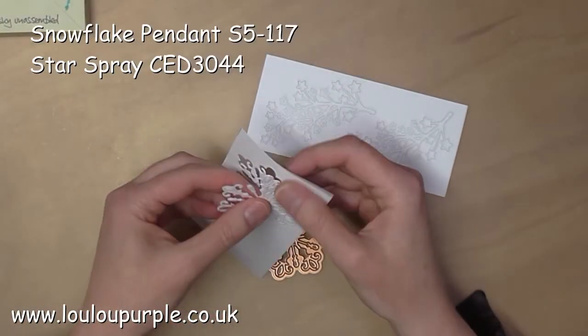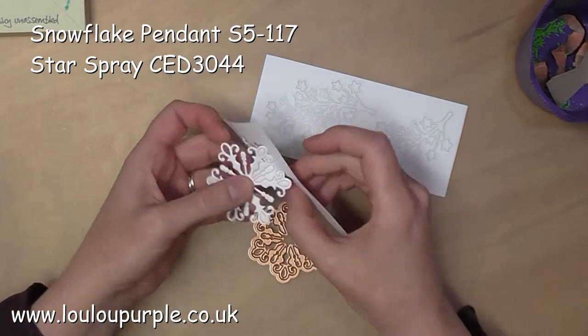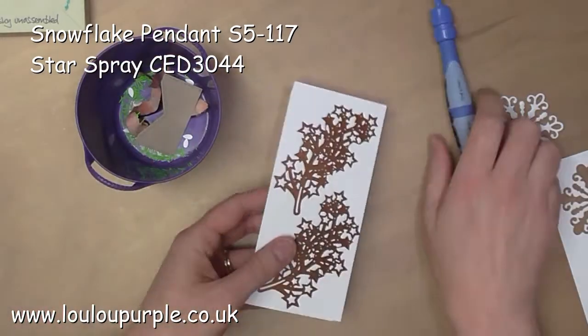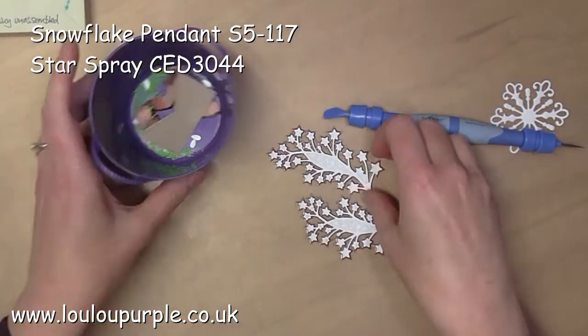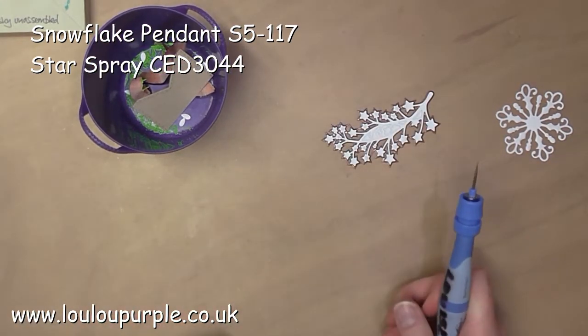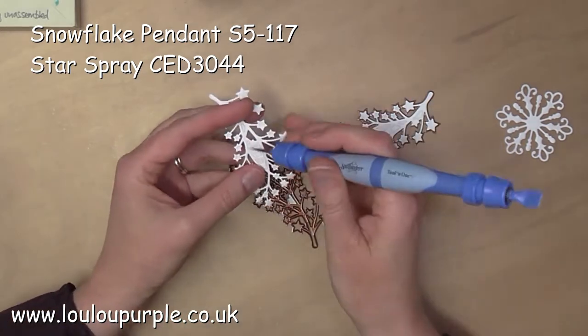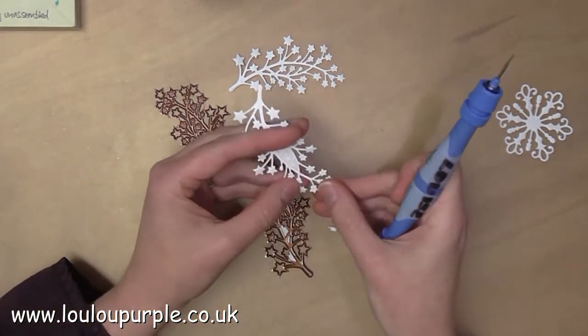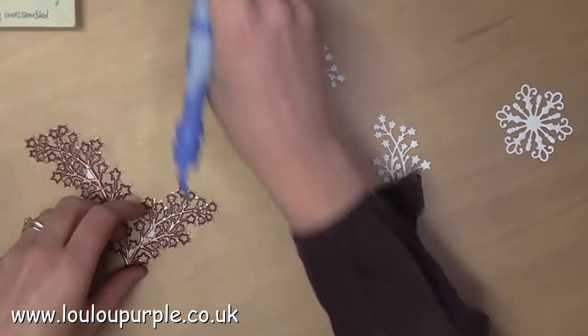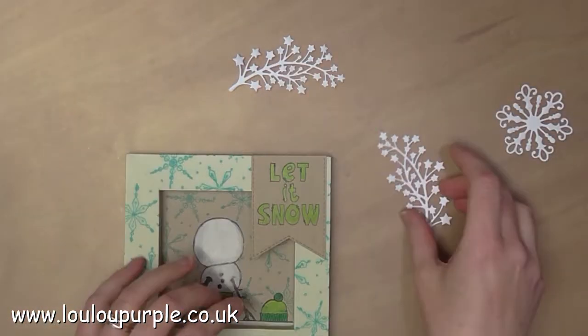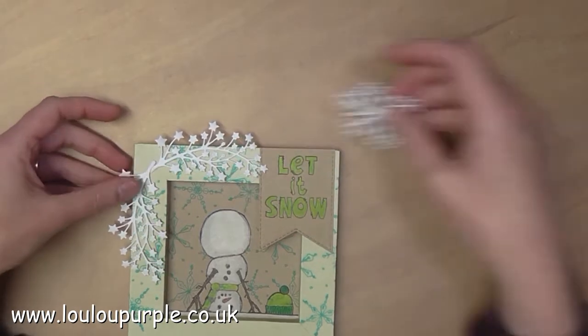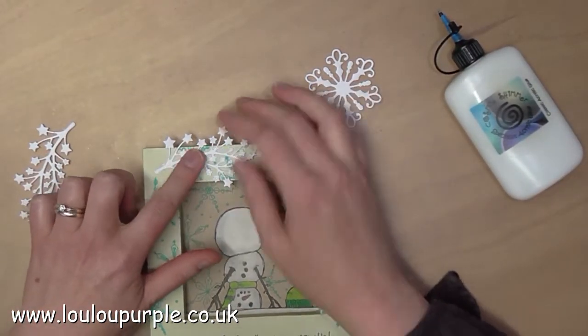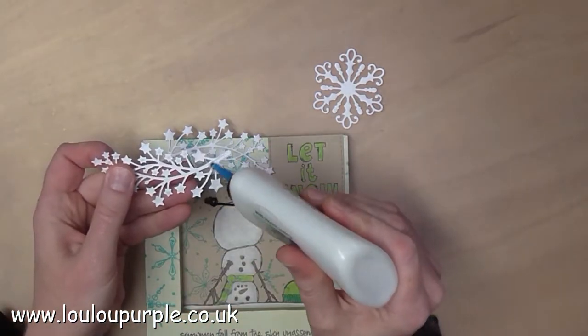For the snowflakes I have used the Spellbinders die called Snowflake Pendant S5117. I have also used the Star Spray dies by Sue Wilson CED 3044. I am now using my Cosmic Shimmer acrylic glue again to stick the Star Sprays and the Snowflake to my shadow box.